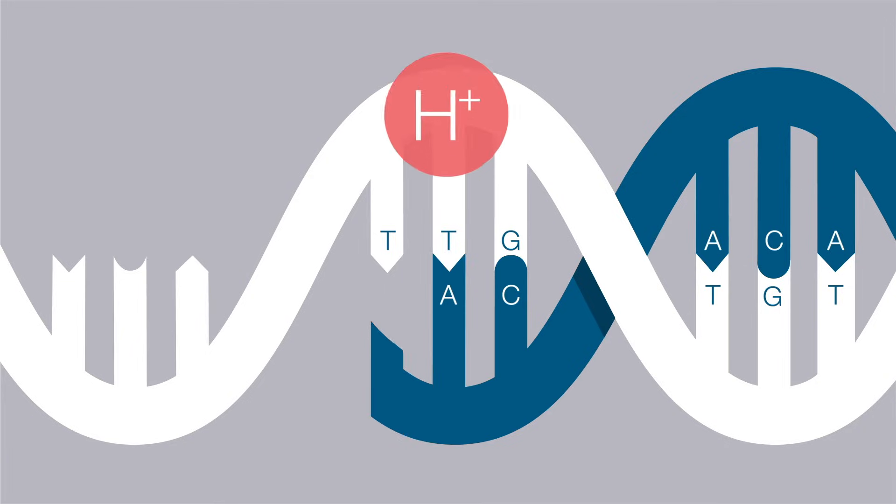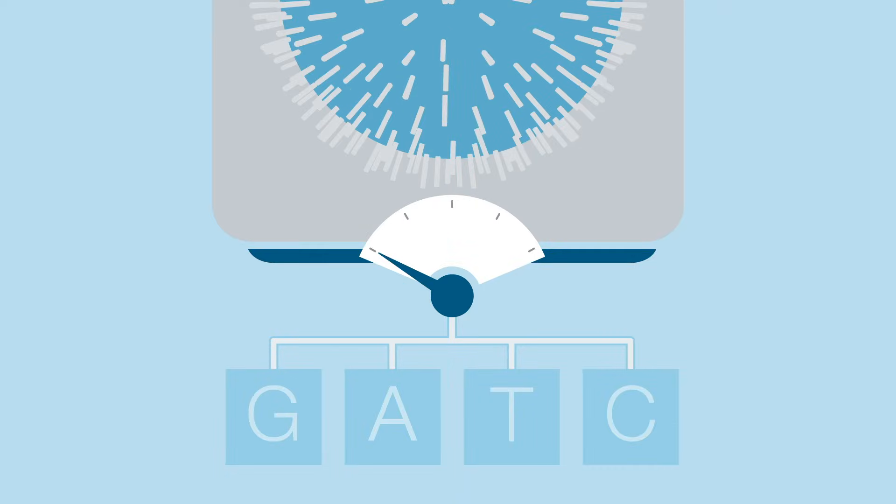If there are two identical bases next to each other, two nucleotides are incorporated, the voltage doubles, and the chip will record two identical bases called.